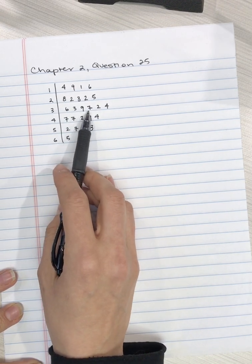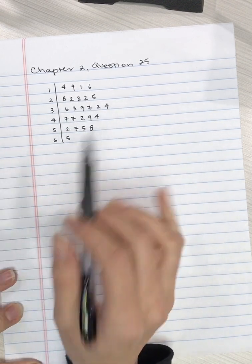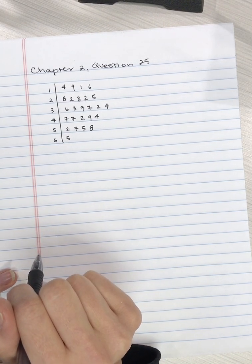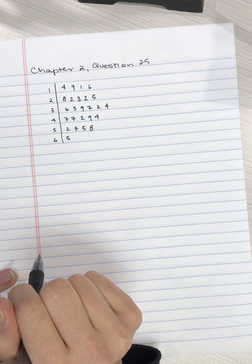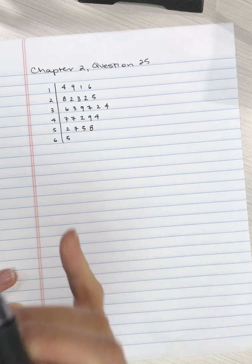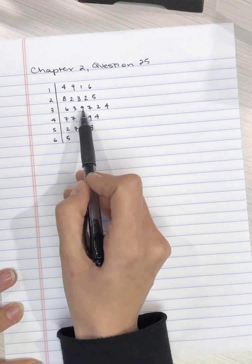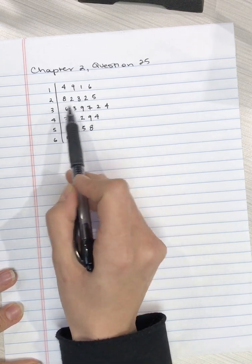So one, two, three, four, five, six - six scores in the 30s. We can identify what those scores are in the 30s: 36, 33, 39, 37, 32, and 34.